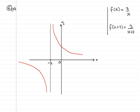Okay, so this is the new position that our graph takes up. And there you have it, that is the graph then of y equals 3 over x plus 2.